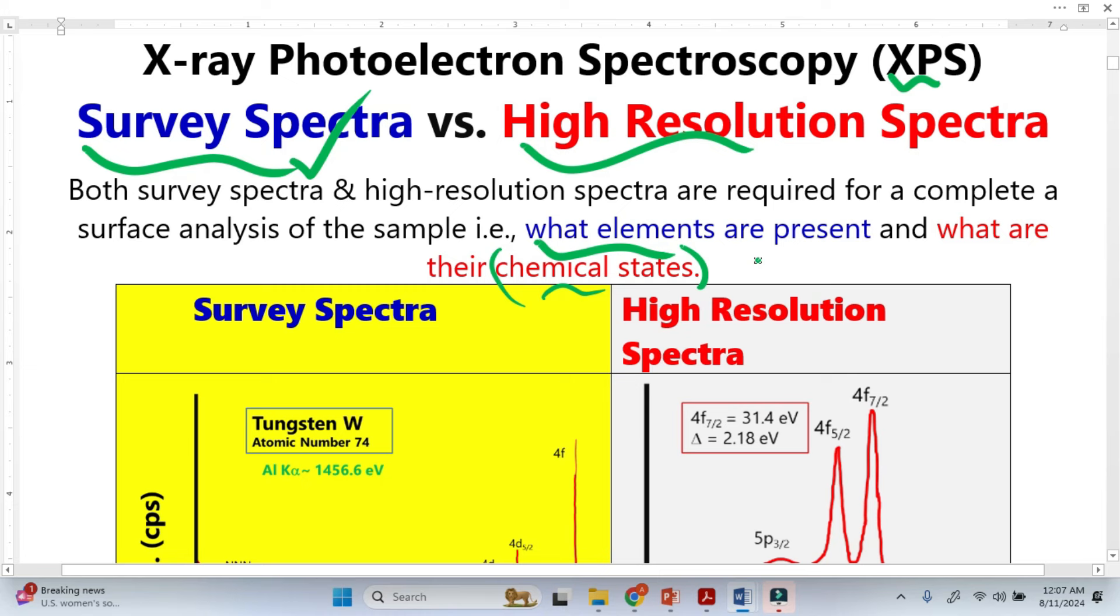All these kinds of information we get from high resolution spectra. Both spectra are very important and we have to run both for a complete analysis. This is how a survey spectra looks like, and this is how high resolution spectra looks like.